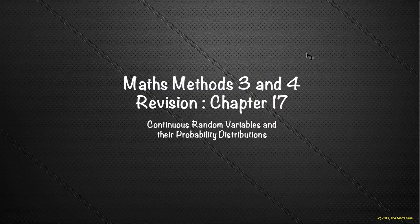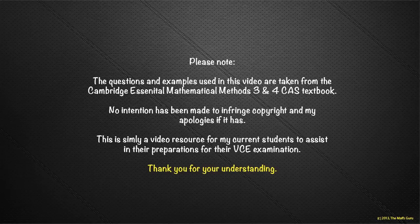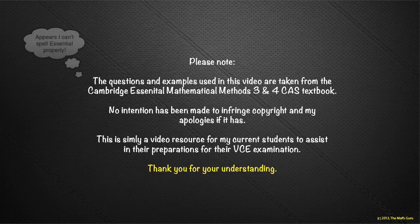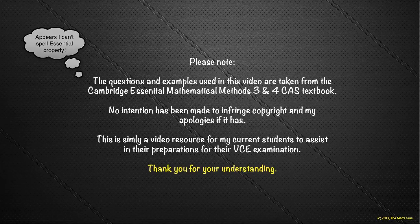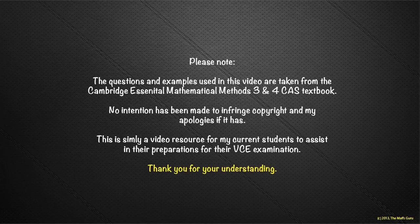Welcome to this Math Methods 3 and 4 revision for Chapter 17, which is specifically continuous random variables and their probability distributions. The examples used are from the Cambridge Essential Mathematics Methods 3 and 4 CAS textbook. No intention has been made to infringe copyright; this is simply a video resource for current students to assist in their preparations for their VCE examination.